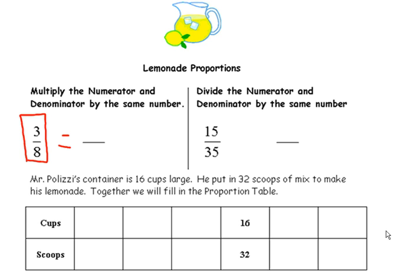I can multiply both the top part of my ratio and the bottom part of my ratio by the same number, and I will get an equivalent ratio. These two equivalent ratios will give me a proportion. I could have chose any number other than 3, as long as I kept it the same for the top and the bottom.